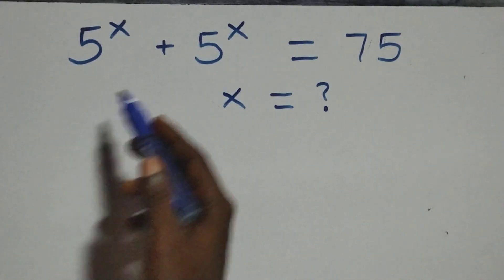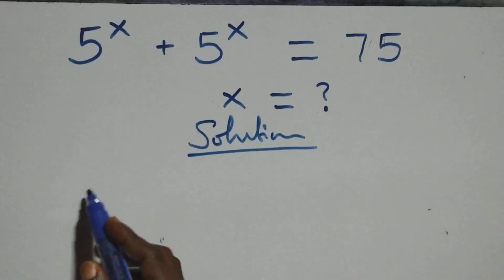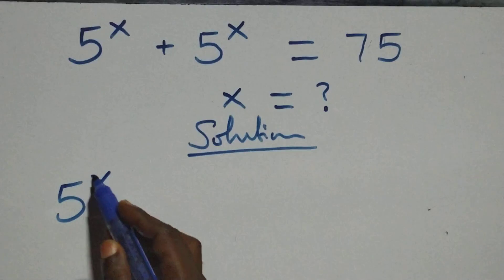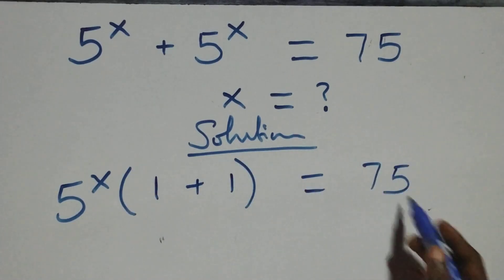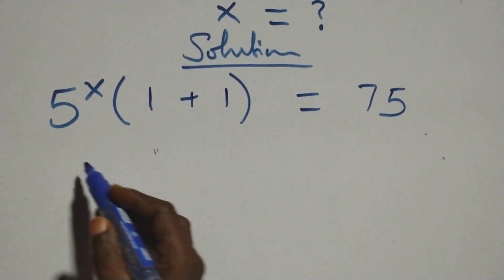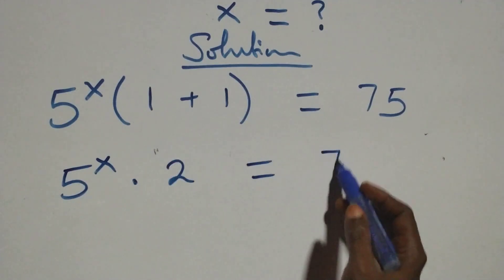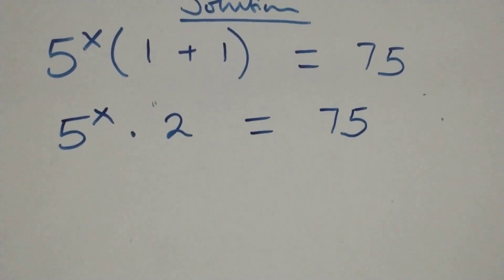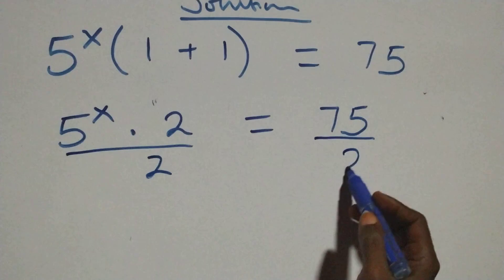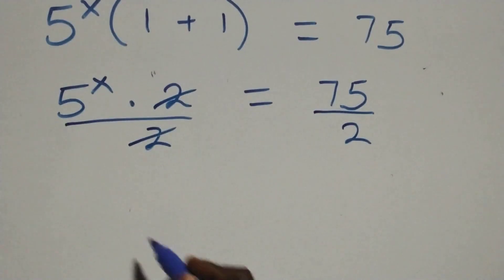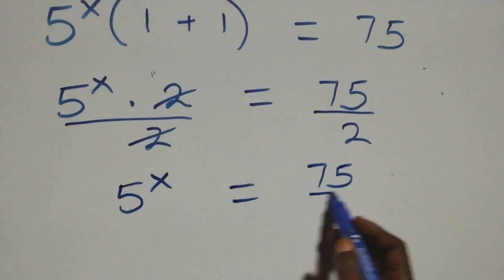Hello, you're welcome. Here's how to solve this equation. From what we have here, we factor 5 raised to power x out, giving us 5^x into brackets (1 plus 1) equals 75. The next step: 5^x times 2 equals 75. We then divide both sides by 2, and the 2s cancel each other, so 5^x equals 75 over 2.